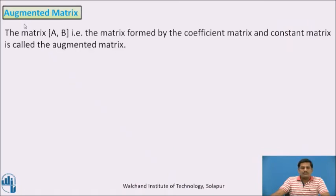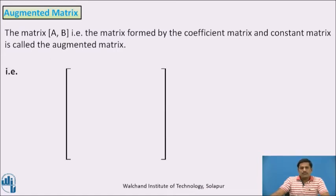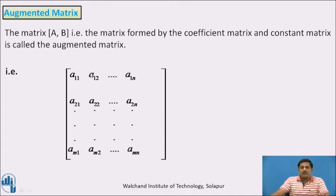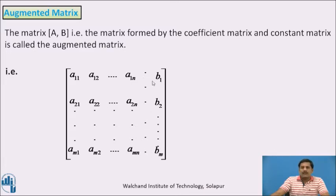Now, the definition of the augmented matrix. The matrix of the form [A | B] — that is, the matrix formed by combining the coefficient matrix and the constant matrix — is called the augmented matrix. For the above general system, we write the coefficient matrix and join the constant column matrix by drawing a vertical dotted line, giving entries b1, b2, bm. This is the augmented matrix of the above system.